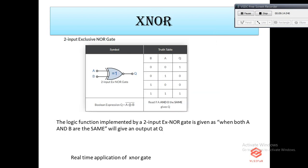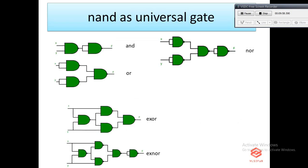The XNOR gate, or Exclusive NOR gate, does the opposite of the XOR gate. It gives a low output if either but not both of its two inputs are high. The symbol is an XOR gate with a small circle on the output. The output of the XNOR gate is high only when both inputs are either both zero or both one. The small circle represents inversion.